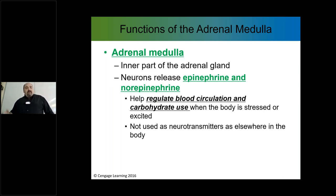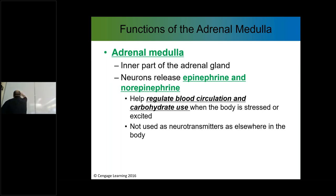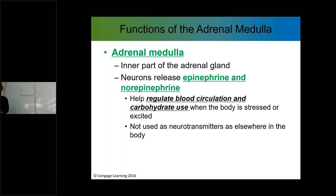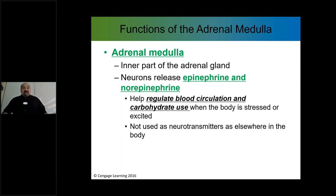Write this term down: we'll use the term neurohormone. These are very unique in comparison to the other nerve chemicals we talked about — acetylcholine, serotonin, dopamine. These are very important. They help to regulate blood circulation and carbohydrate use when the body is stressed or excited.